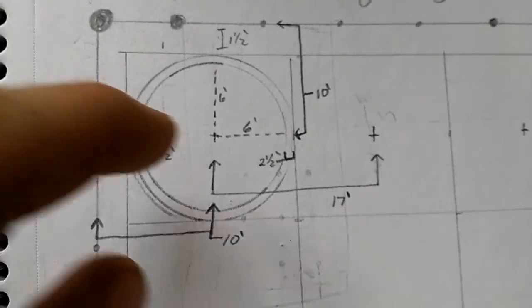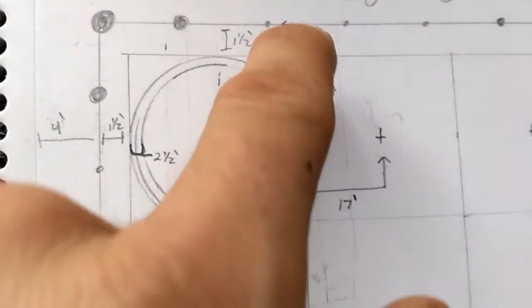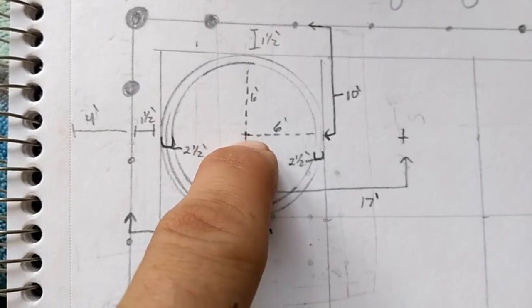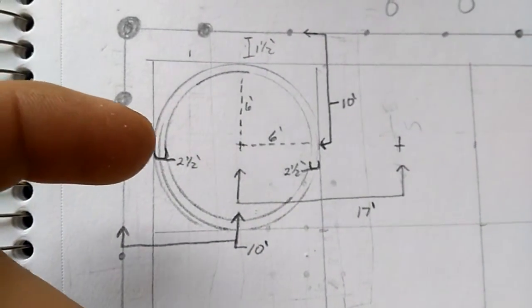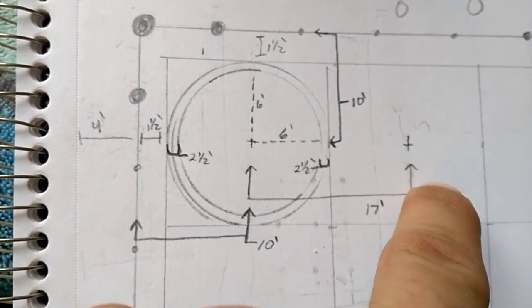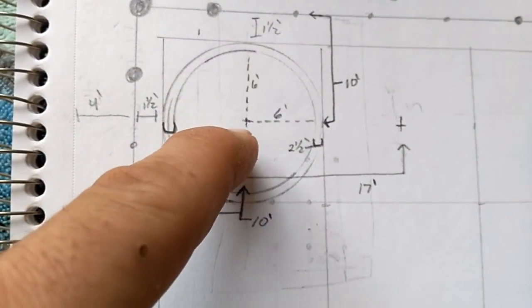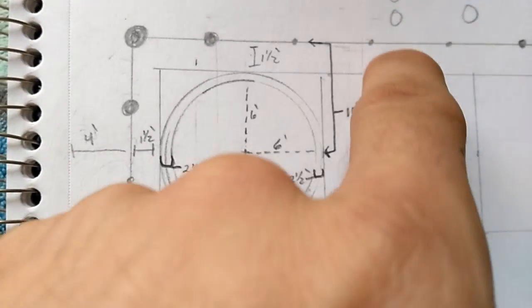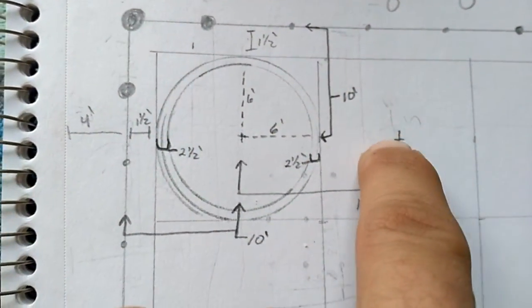So this first anchor will actually be 10 feet in off your fence line both directions and then from there it'll be 17 foot from anchor to anchor. All you have to do is measure 17 foot over to here, measure 10 foot up to the fence line and you'll know where your second anchor is.